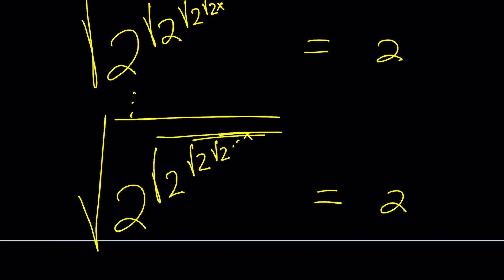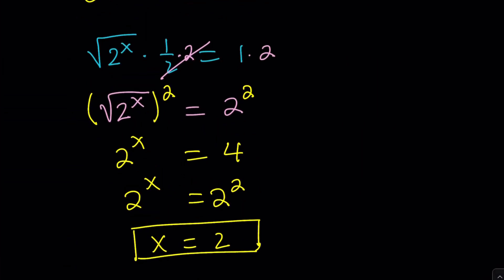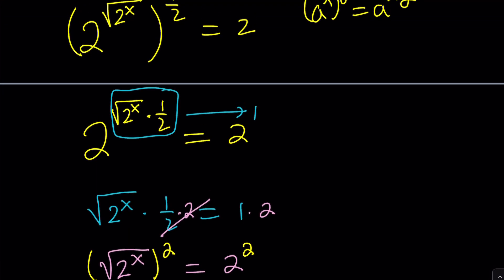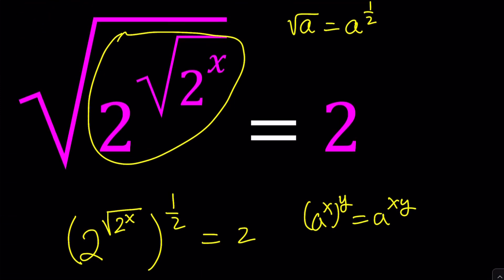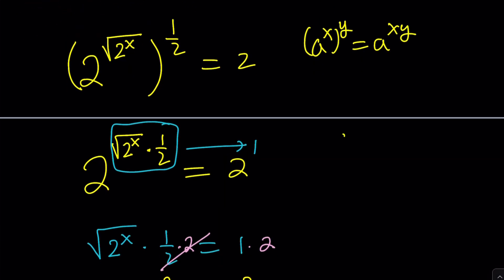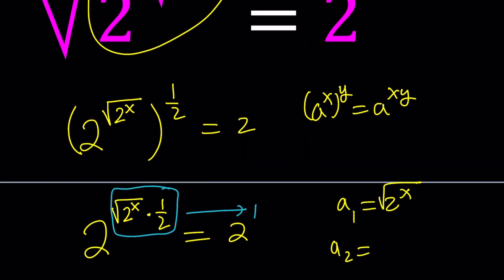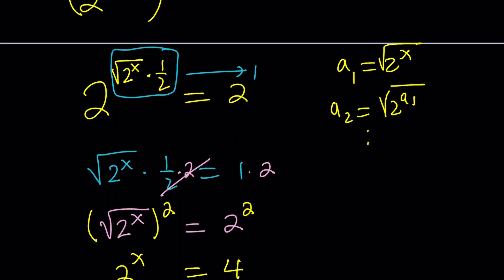But obviously, convergence is another story. And you kind of have to go with the limits. And you kind of define, you need to define your sequence. So how do you define your sequence? You could probably start with something like, okay, let a sub 1 be 2 to the power x or the square root of 2 to the power x and then a sub 2 equals square root of 2 to the power a sub 1. And then, in other words, you can basically say that a sub n is equal to the square root of 2 to the power a sub n minus 1. Make sense? And then you can kind of look at the limit as n approaches infinity.